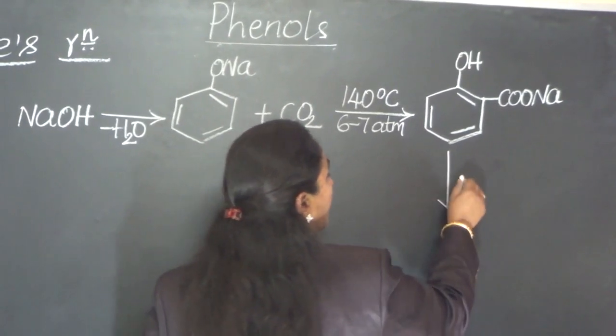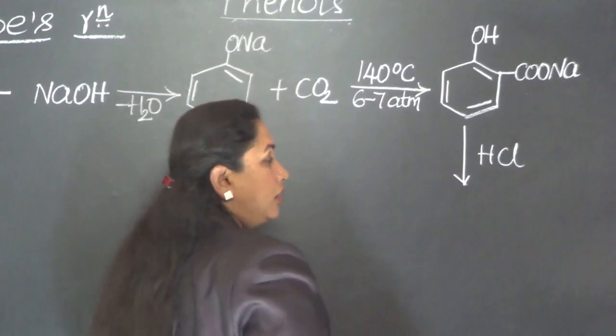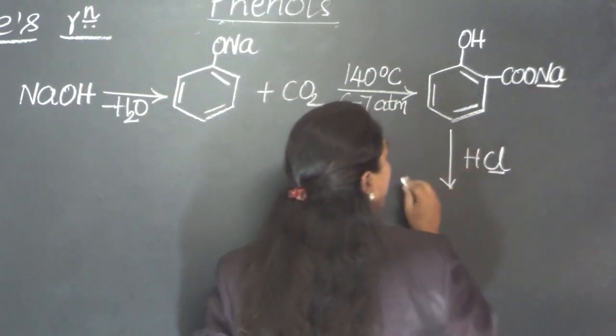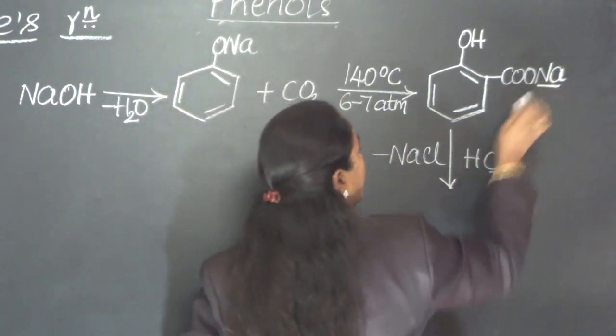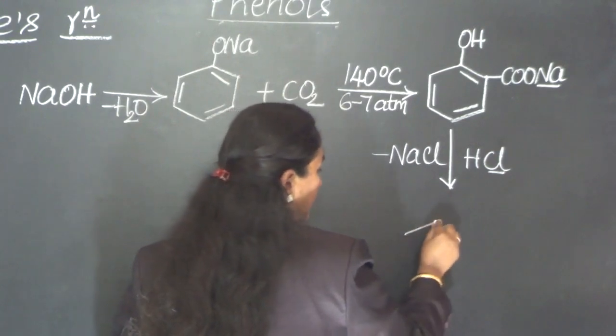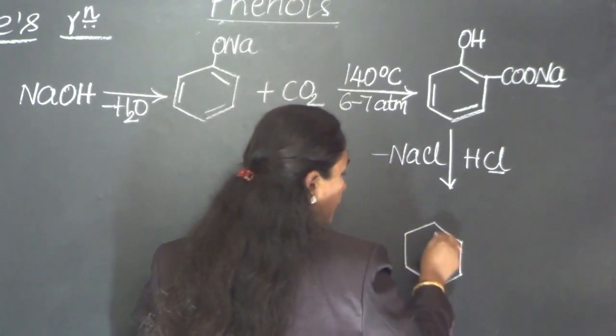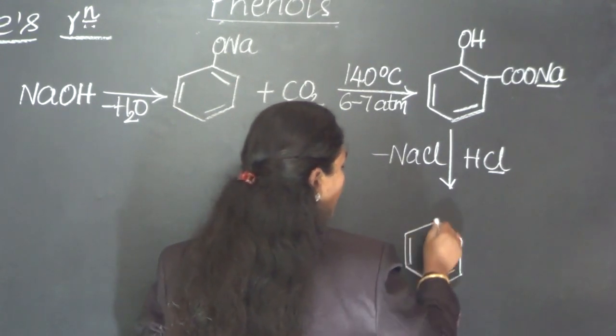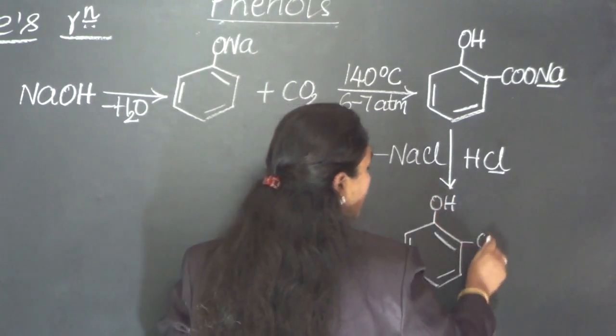This is acidified further with HCl. What happens? This Cl will react with this Na and comes out as NaCl. H will take up the place of Na. Thus we land in the formation of salicylic acid. OH here and COOH here.